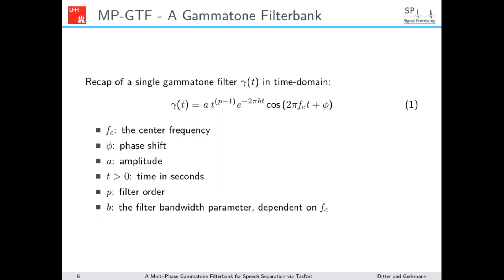We make use of an auditory filter bank using the gammatone filter bank. The important parameters for the gammatone filter formula are the center frequency, the phase shift, and the filter bandwidth parameter which is dependent on the center frequency. For more details on this, please have a look at the paper itself.